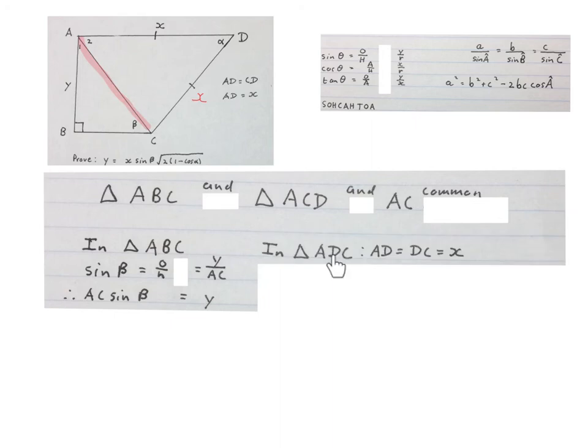Then we go into triangle ADC, the other triangle, and we remind ourselves AD is equal to DC is equal to X. Then using the cos rule we write the length of AC square equals this X square plus that X square minus 2 times the X times the X cos of the included angle. Please stop the video and get your brain around this.